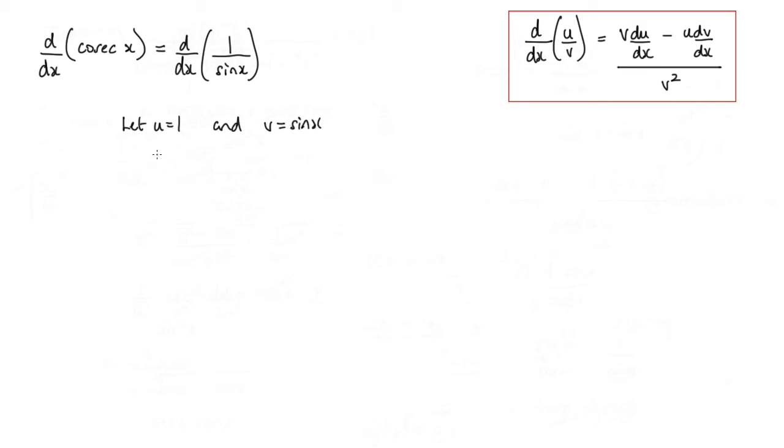Now when we differentiate each of these, we get du by dx, that's going to be equal to 0, and dv by dx, that's going to be cos x.